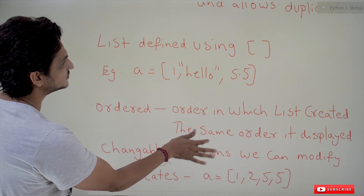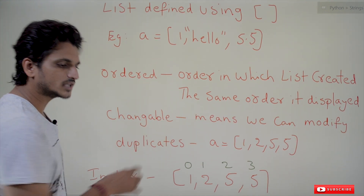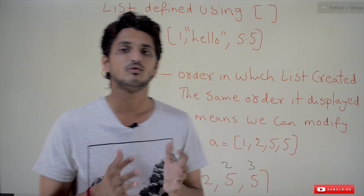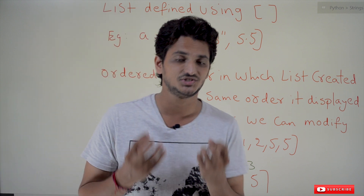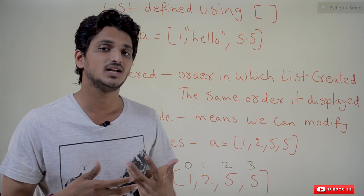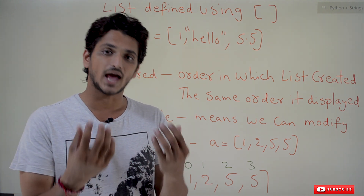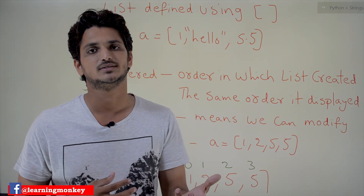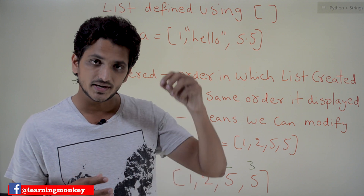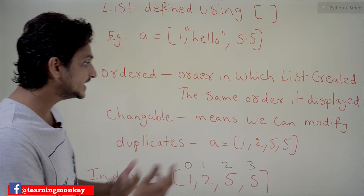Next, a list is changeable. Changeable means once the list is created, we can change it — we can modify the list, we can add elements, we can delete elements, we can modify existing elements. That is what changeable means.